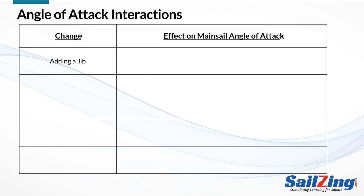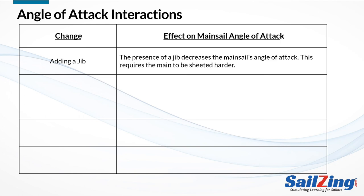If you added a jib to a boat that didn't have one, how would the presence of the jib affect the angle of attack of the airflow over the mainsail? The jib deflects air before it gets to the mainsail and puts the mainsail in a header. This means the mainsail has to be sheeted in tighter to get the proper angle of attack — similar to the effect of having another boat ahead and to leeward of you, which puts you in a header.